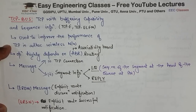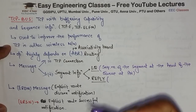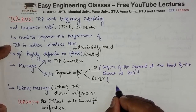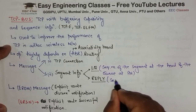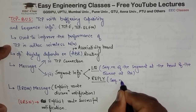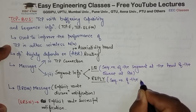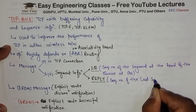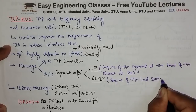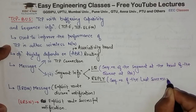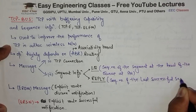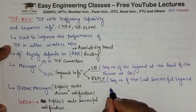PN ka matlab hota hai pivot node. Abhi example se aapko samajh aa jayega. And Reply message carry karta hai the sequence number of the last successful segment at the TCP BUS receiver.